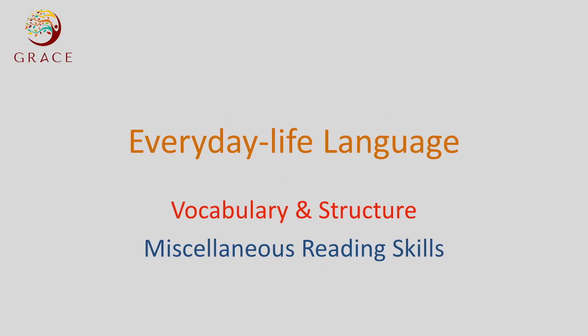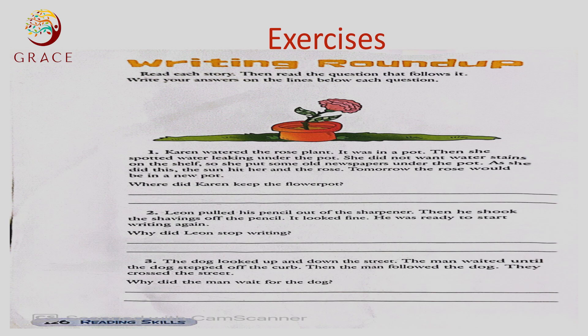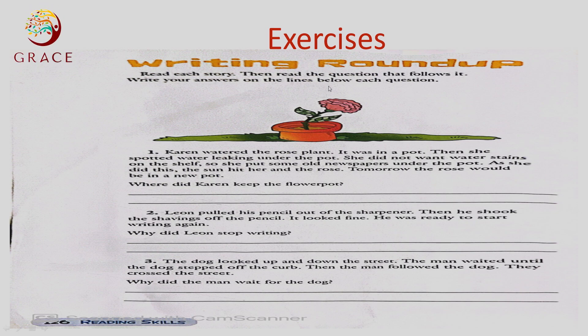We'll see some of the material. It's a little bit different from other comprehensions we used last time. We have developed our reading and writing skills — writing round up. Read each story, then read the question that follows it. Write your answers on the lines below each question. I'm going to write a complete answer based on the question.